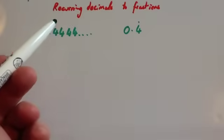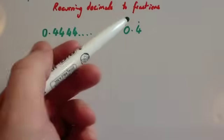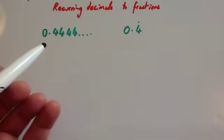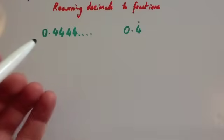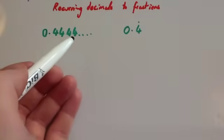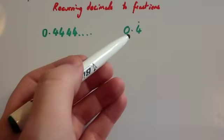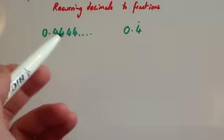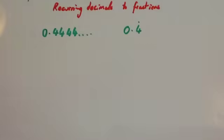In this video we're going to look at how to convert recurring decimals to fractions. Let's start off with 0.4 recurring. That could be written as 0.444... or 0.4 with a little dot above it. These are both 0.4 recurring. Let's look at how to change this into a fraction.